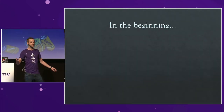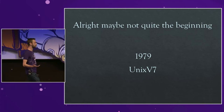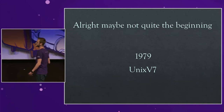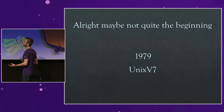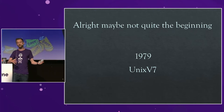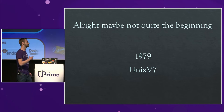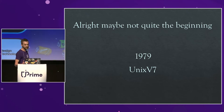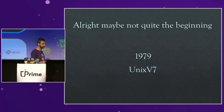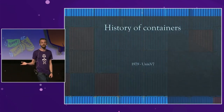So in the beginning — well, not quite the beginning, but before I was born, so I'll class it as the beginning — we had Unix v7. This was really the first kind of technology that helped pave the way to what we have today with containers. The chroot system call was introduced, and this changed the root directory of processes and its children to new locations in the file system. This was in 1979, so quite a while ago.